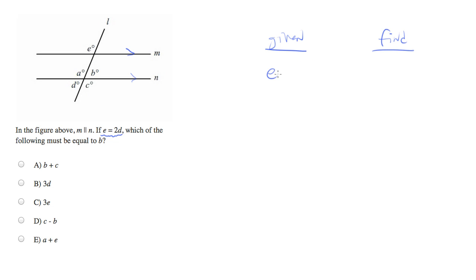We've been given e equals 2d and we've been asked to find b. And as we've seen before, it's possible for you to simplify either side of these, either the given or the find, but we need to get to a match at some point.